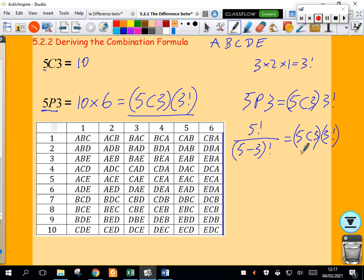That's going to equal 5 choose 3 multiplied by 3 factorial. Dividing on both sides by 3 factorial will give me a formula for 5 choose 3. 5 choose 3 equals 5 factorial over 3 factorial times 5 minus 3 factorial. And there's my formula for 5 choose 3.